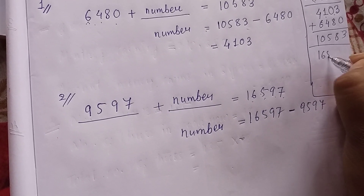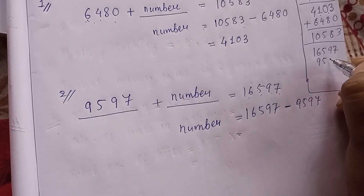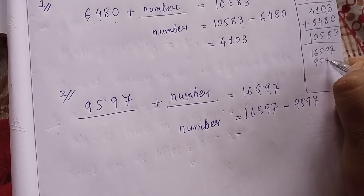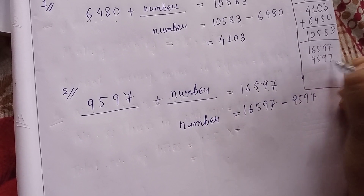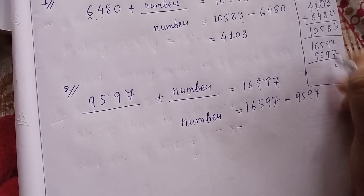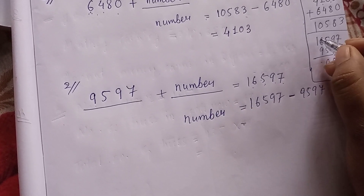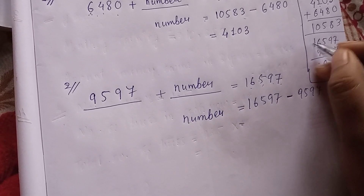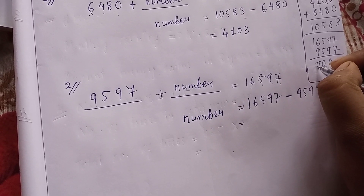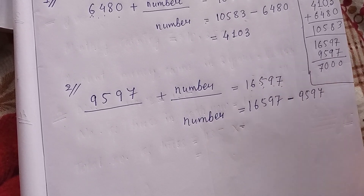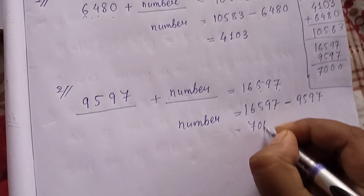So 16,597 minus 9,597: 16 minus 9 is 7, and the remaining digits give zero. So the answer is 7,000.